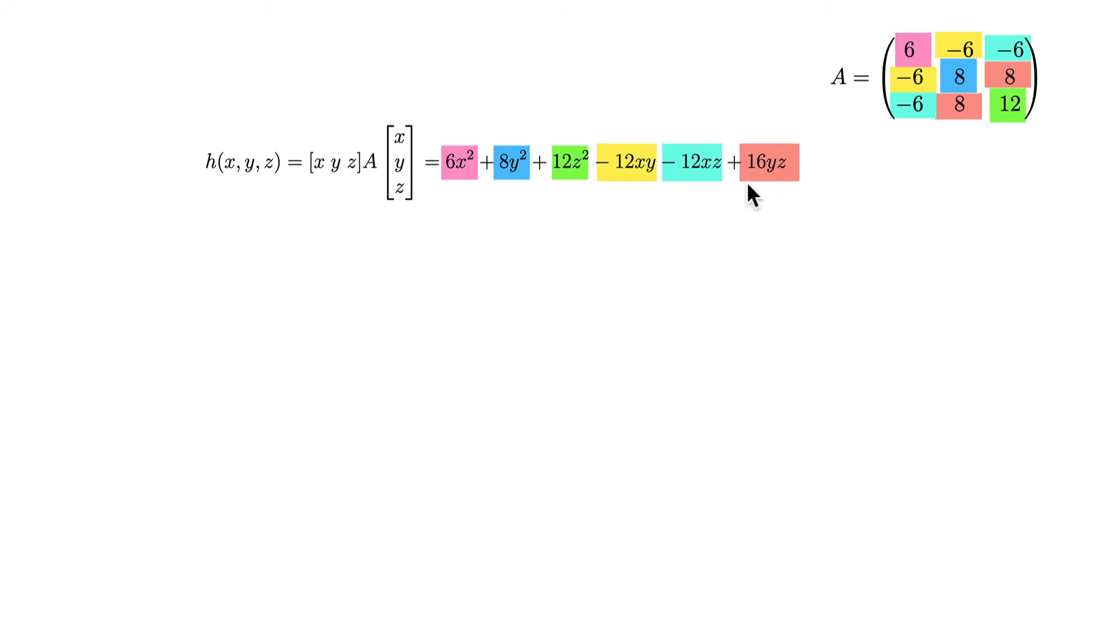So this is our form. By now, I hope that you understand how to read the quadratic form from its symmetric matrix. Now it's time to complete the square. The systematic way looks as follows. First, I pick all the terms which contain variable x, and I put these terms together.